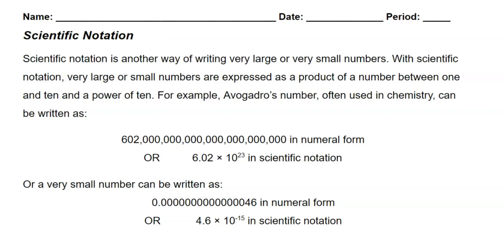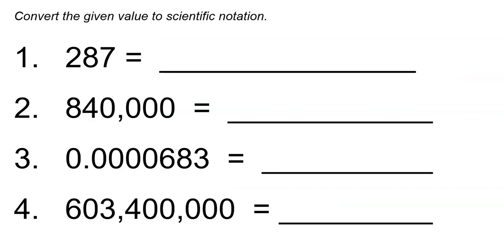In this video we are going to look at scientific notation practice. Starting with number one, it says convert the given values to scientific notation. For scientific notation we need a number between 1 and 10, and then we need to multiply it by 10 to some power. That power serves to get it back to its real value.